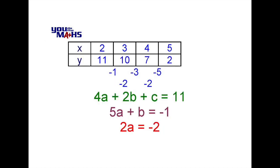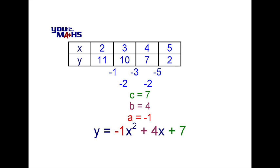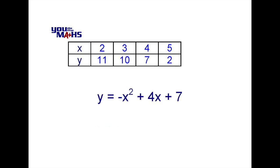We'll express each of those equations and see how to solve them. It's wise to pause and check each solution. The last equation is easiest to start with: 2a equals negative 2, so a equals negative 1. Substituting that into the equation above, we find b equals 4. Substituting both values into the first equation in green, we find c equals 7. Putting those all together we get y equals negative 1x squared plus 4x plus 7, which simplifies to y equals negative x squared plus 4x plus 7.